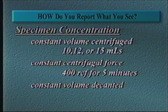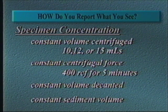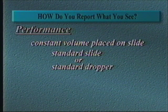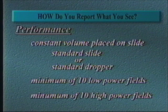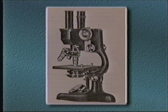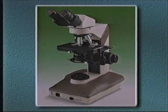Once the urine is centrifuged, a constant amount must be decanted, always leaving the same volume of sediment. Commercially available tubes can aid in standardizing the volume. The volume placed on the slide should be a standard amount, and using a slide designed with a constant depth and area is helpful. If those are not used, a standard dropper with a constant volume should be used. A minimum of 10 low power and 10 high power fields should be examined. Inexpensive ocular inserts can divide the microscopic field into quarters to help in enumerating cells. We strongly recommend the use of phase microscopy; if you do not use phase, it is helpful to use one of the many urine stains commercially available.